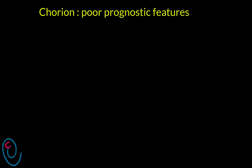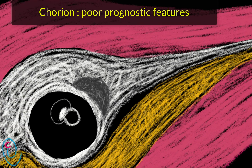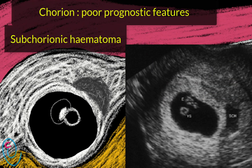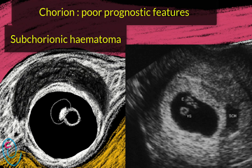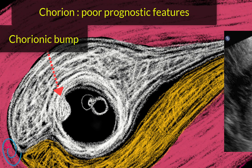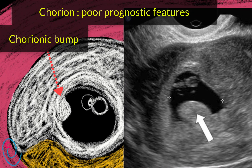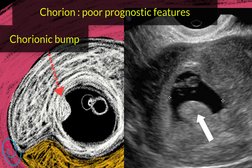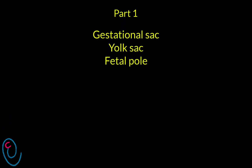Poor prognostic features related to the chorion and decidua include subchorionic hematoma. The significance of subchorionic hematoma depends on the size of the hematoma. A large hematoma involving more than half of the circumference of the gestational sac is associated with an increased risk of pregnancy loss. The second feature is chorionic bump, which is an irregular convex bulge from the choriodecidual surface into the gestational sac. It is thought to represent a hematoma at the choriodecidual surface that bulges into the gestational sac, and its significance is controversial.